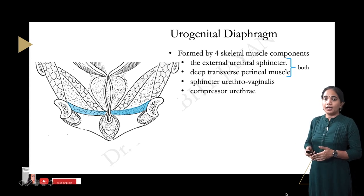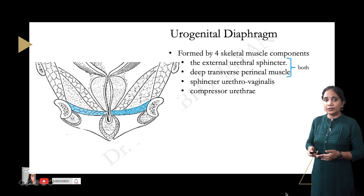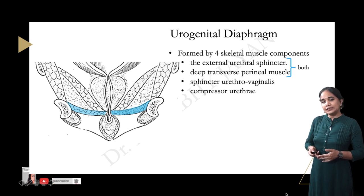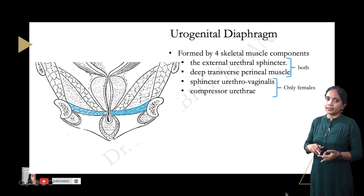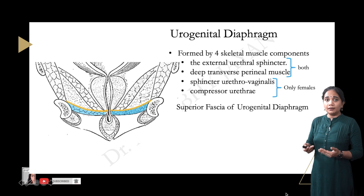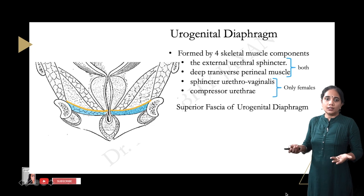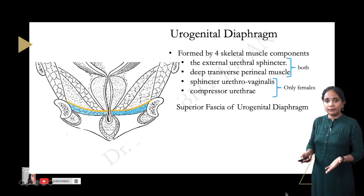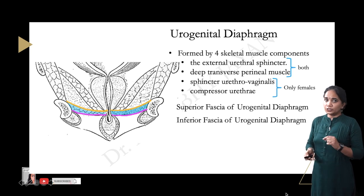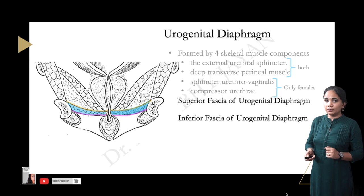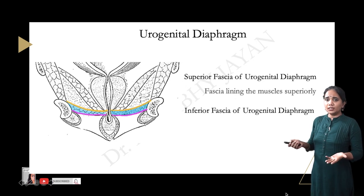The muscles forming the urogenital diaphragm are: the external urethral sphincter, the deep transverse perineal muscles, the sphincter urethrovaginalis, and the compressor urethrae. The first two muscles are seen in both males and females, while the sphincter urethrovaginalis and compressor urethrae are seen only in females. The superior fascia is called the superior fascia of the urogenital diaphragm, and the inferior fascia is called the inferior fascia of the urogenital diaphragm.